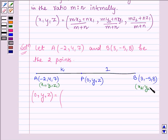So now let us find the P and its coordinates (0, Y, Z). So here 0 is equal to k into X2 which is 3 plus 1 into -2 upon k plus 1